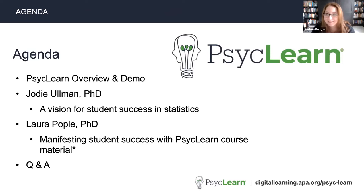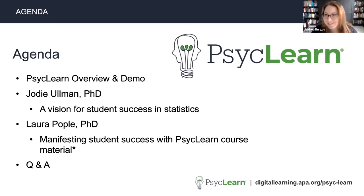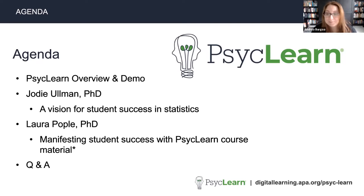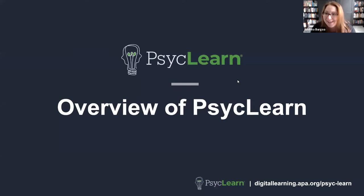A quick overview of what we're going to talk about today: we'll hear a bit about PsychLearn and get a demo of the student experience. Then we'll hear from Jodi about her vision for student success in statistics and how she helps students find the joy of statistics. Then Laura will talk about manifesting student success with the PsychLearn course and its development at APA. We'll end with a Q&A. You don't have to wait — please use the Q&A functionality or the chat. I'll now turn it over to Linda.